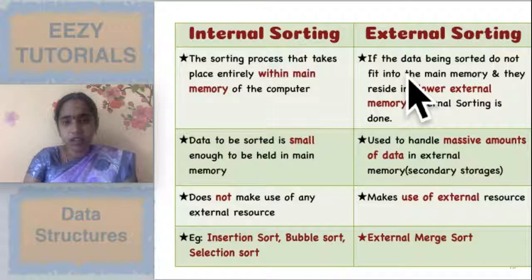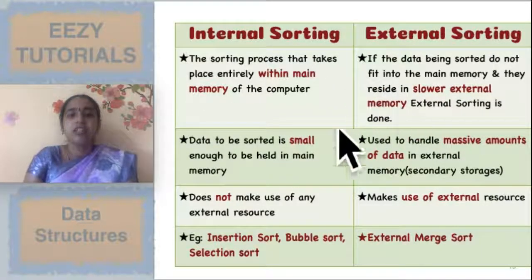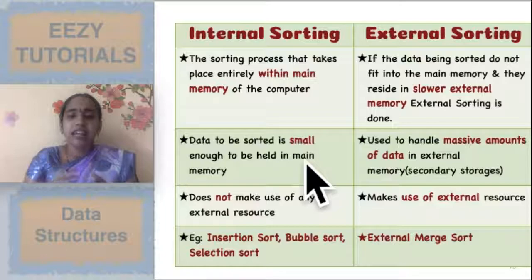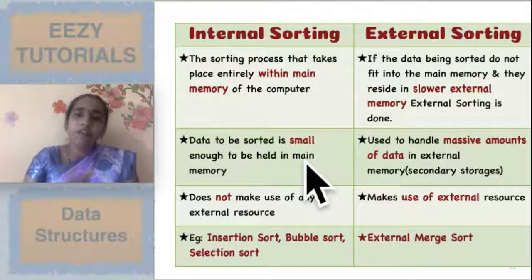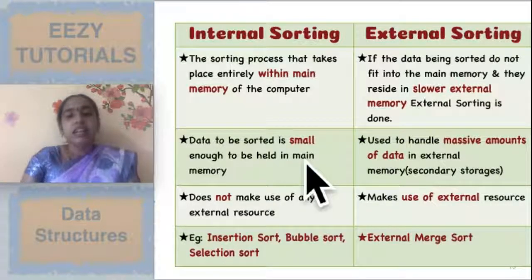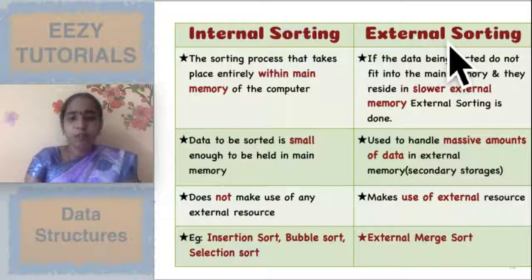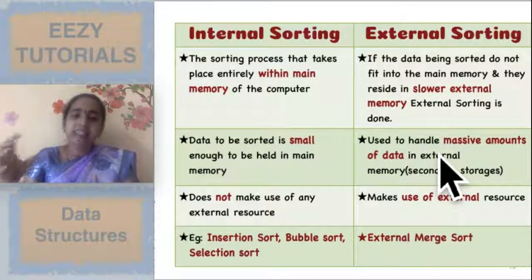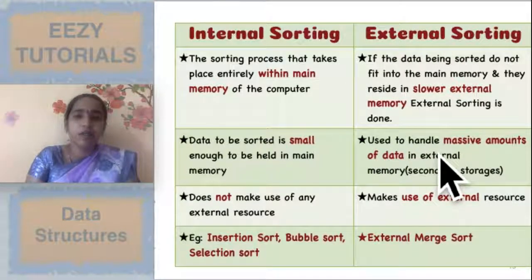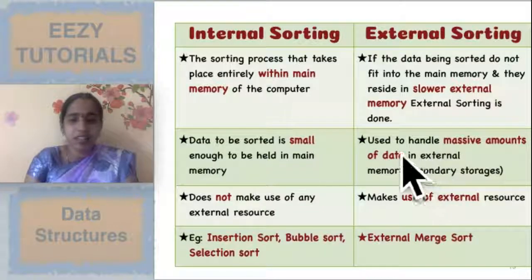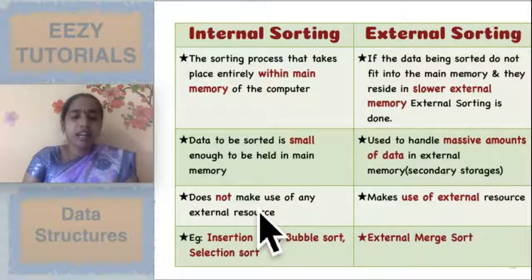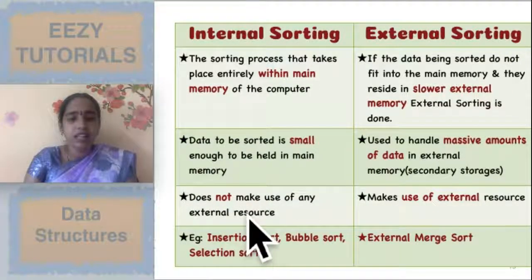The differences between internal and external sorting: if the data to be sorted is very small, you can perform the entire sorting in main memory — that is internal sorting. If you have a massive amount of data, it will not fit into main memory, so you go for an external device — that is external sorting. Since the data is very small, internal sorting will not use any external resource, whereas external sorting will be using some external resource.